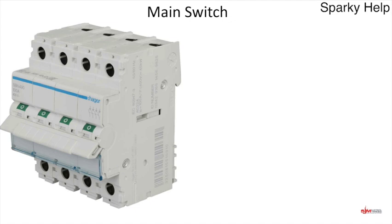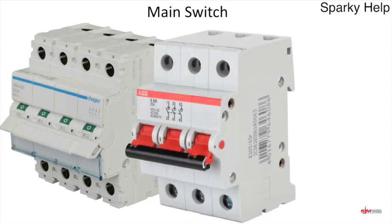Where would you want to use a four-pole? Where you definitely have to use a four-pole isolator as a main switch is a three-phase and neutral TT installation. The regulations state that in a TT installation, you must break all live conductors — and remember, this includes the neutral. But you could equally use these in any other three-phase and neutral installation; it's just not a regulation requirement. In all other types of three-phase installation, you could get away with just a three-pole switch.